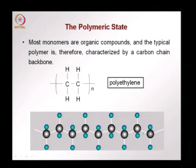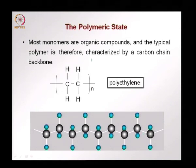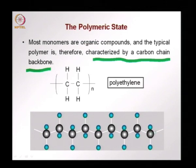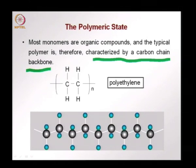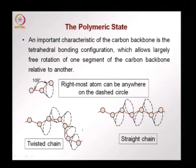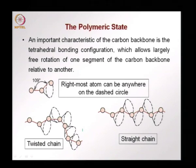Most of the monomers involved are organic compounds, and the typical polymer is therefore characterized by a carbon chain backbone. That backbone is the central structure of the polymer, made up of carbon atoms. Polyethylene is a classic example — with carbon and hydrogen atoms forming a chain. Covalent bonds form long, strong chains and the covalent bond is directional, giving a certain directionality to how monomers are bonded together.